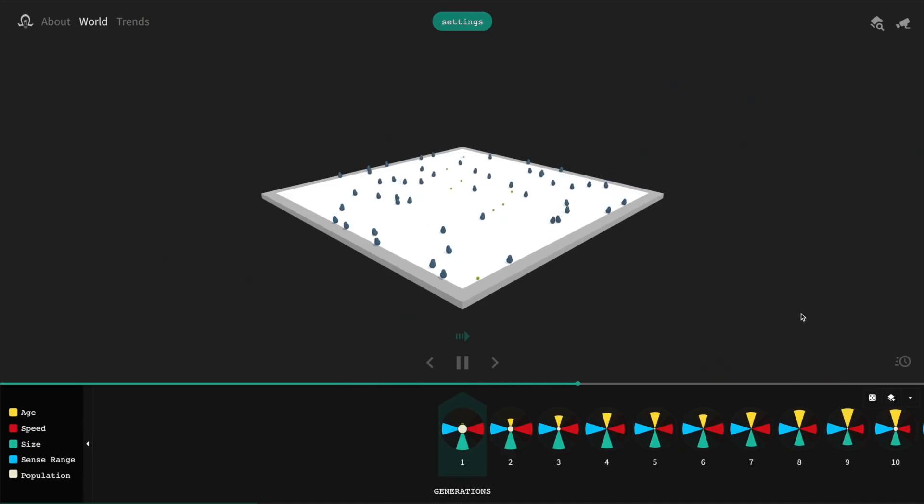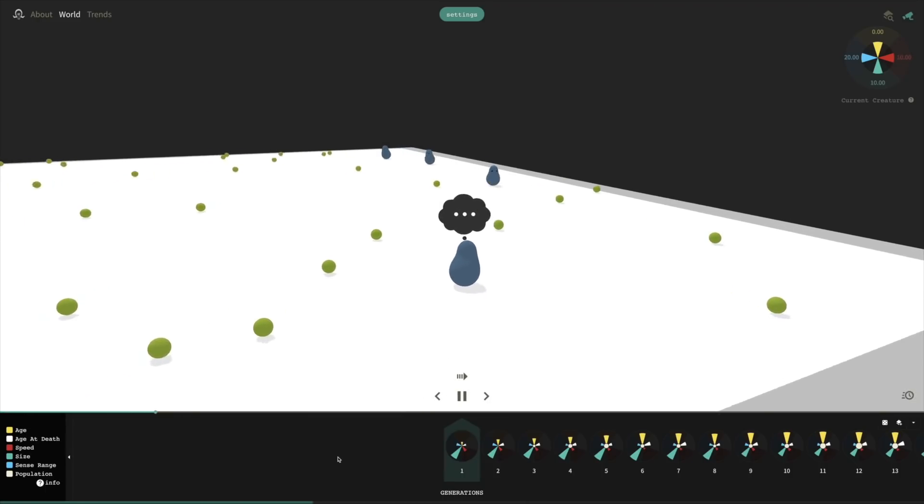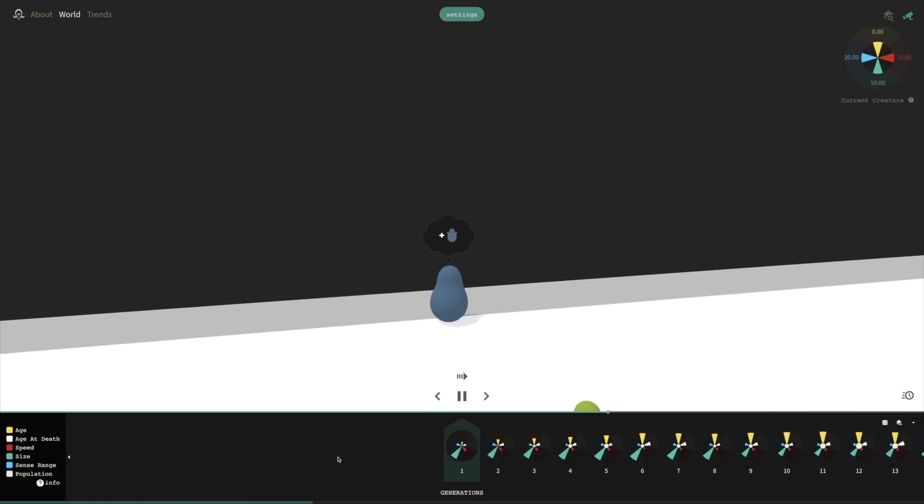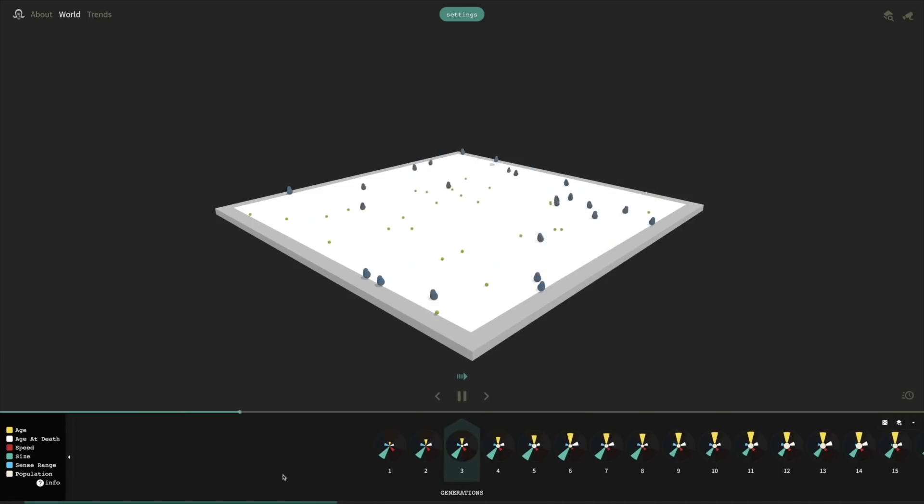This makes sense because if there are ever fewer blobs than there are food pellets, then it's more likely the blobs can find two food and reproduce. Then the population will start growing again and get back to where it should be. So, how do we get the average age?